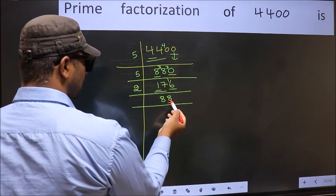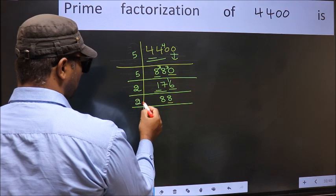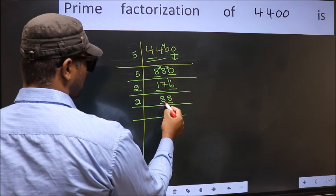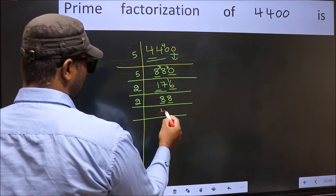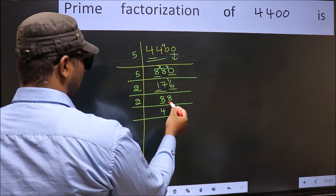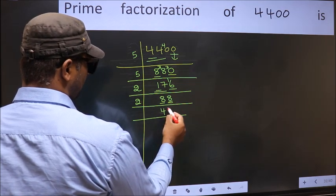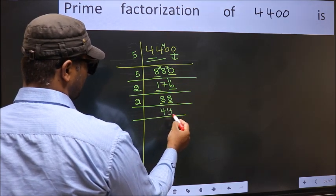Now the last digit is even, so take 2. First number 8. When do we get 8 in the 2 table? 2 fours = 8. The other number 8: when do we get 8 in the 2 table? 2 fours = 8.